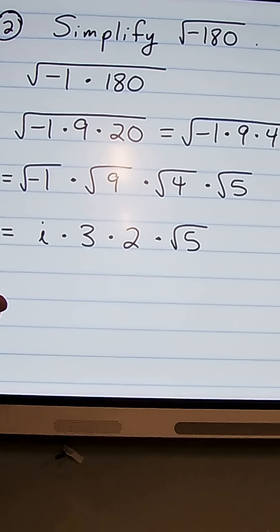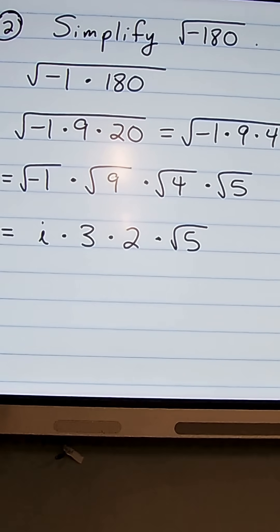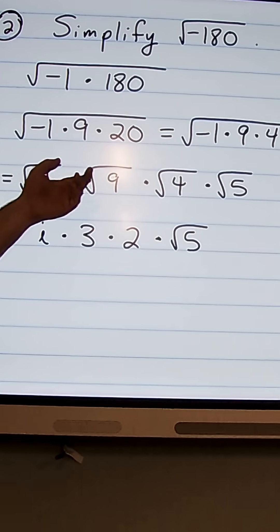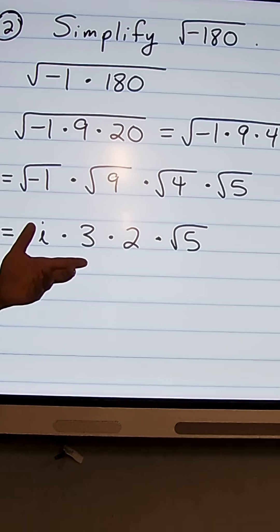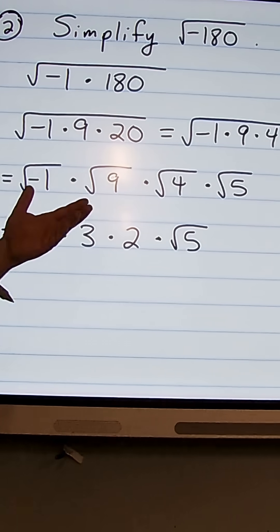Now one thing we want to have here is we want to have plus or minus, because for each of these you can multiply a positive, for instance square root of 9. You can multiply a positive 3 times a positive 3 to get 9, or you can multiply a negative 3 times a negative 3 to also get 9.